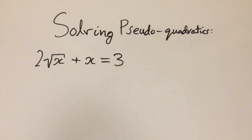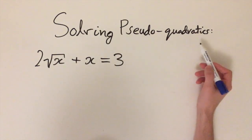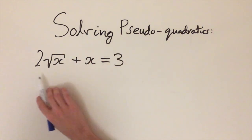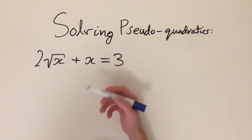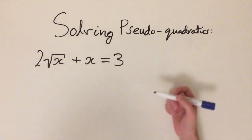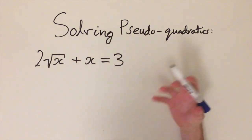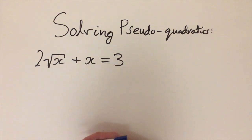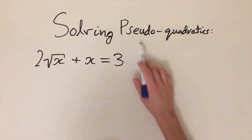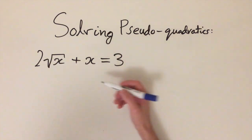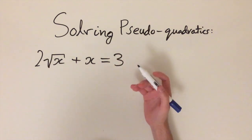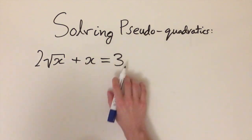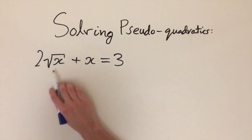In this video we're going to be looking at something called a pseudo quadratic. It's an equation that doesn't look like a quadratic equation, but using a certain transformation we can turn it into one and then use our usual methods to solve it. The word 'pseudo' hints at the fact that the quadratic is hidden or in disguise, so we need to uncover it.